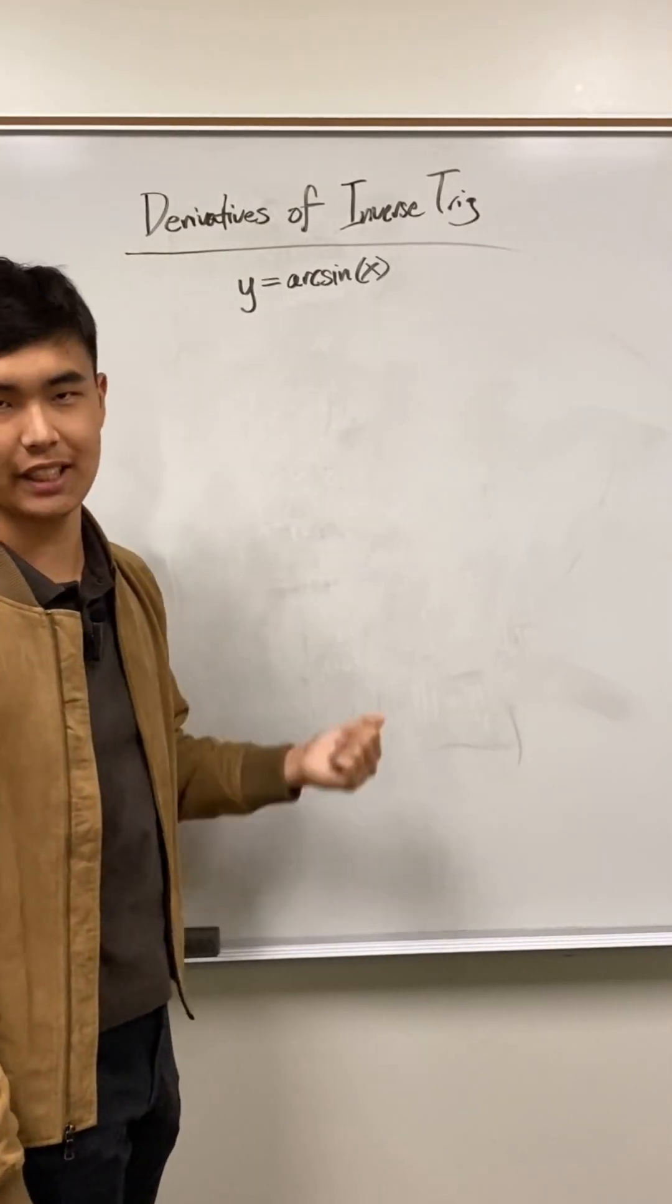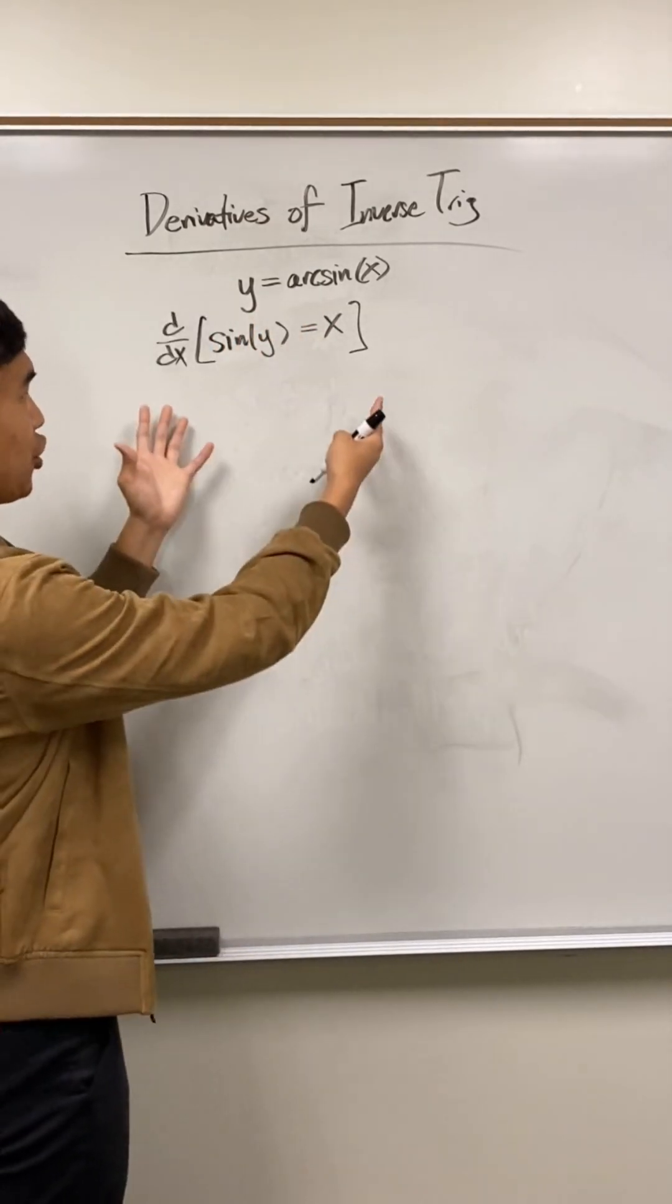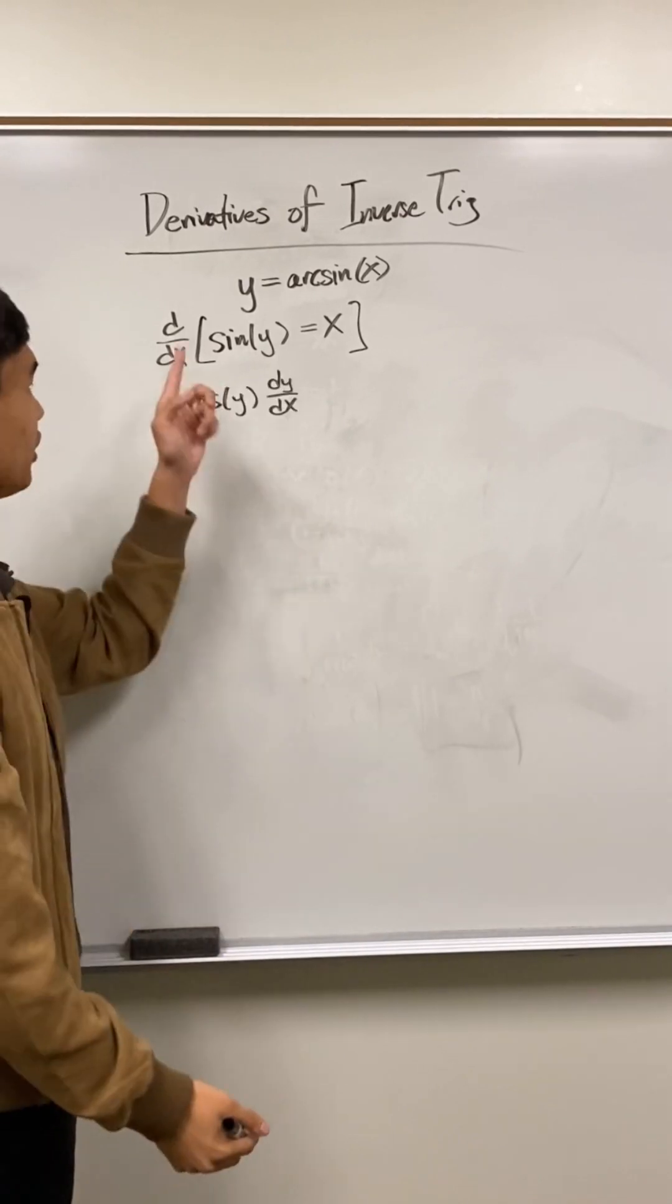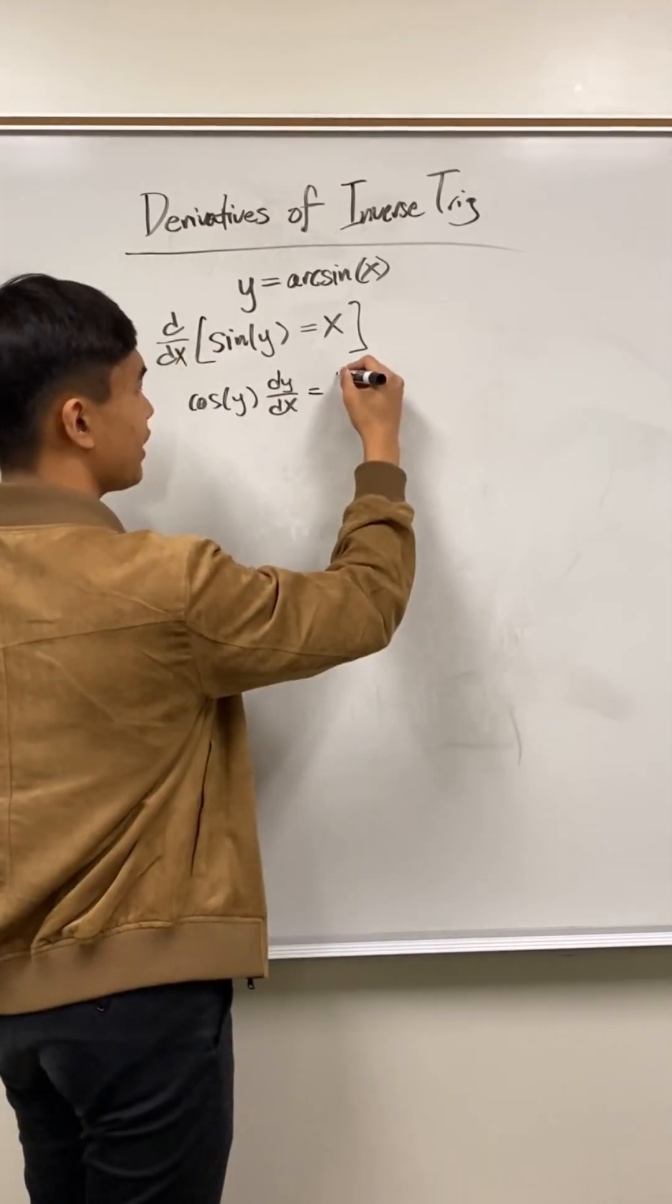I'll show you how to find the derivative of arcsine of x. We begin by taking the sine of both sides of the equation. Then I'm going to differentiate both sides with respect to x. On the left, we have a function of y, so remember, we have to use implicit differentiation. And the right side is just 1.